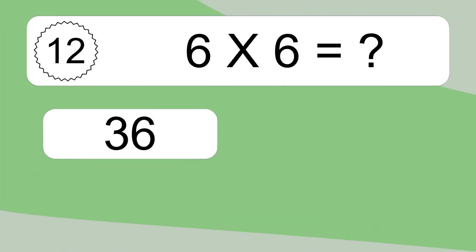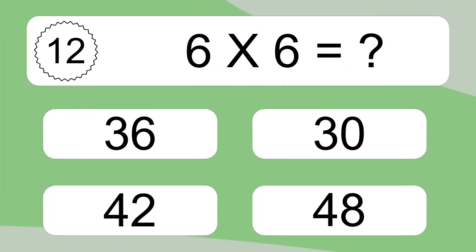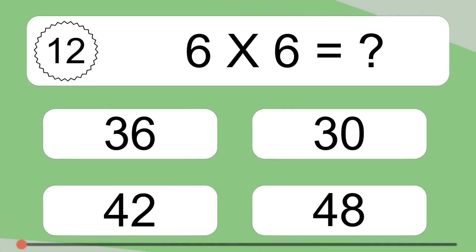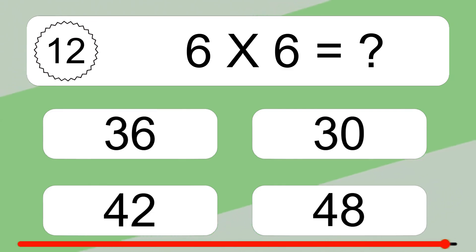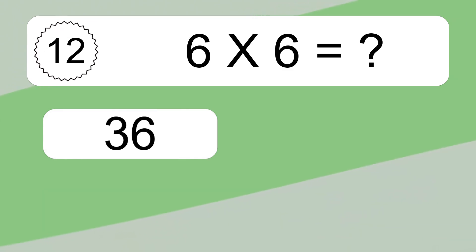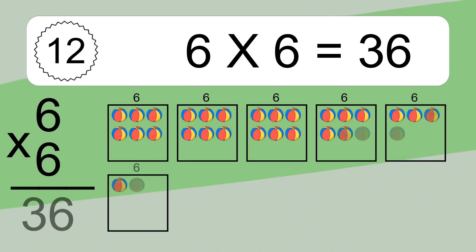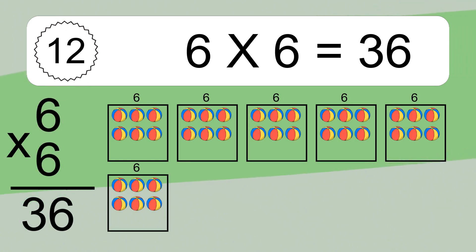6 times 6 equals what? 6 times 6 equals 36. We have 6 boxes,